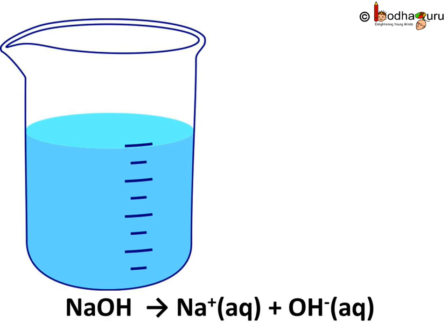When a base dissolves in water, it gives a metal ion as a cation and a hydroxide ion as an anion. For example, NaOH gives Na⁺ plus OH⁻ — that is, sodium and hydroxide ions are formed. But not all bases are soluble in water. Only the bases which are soluble in water are called alkali.